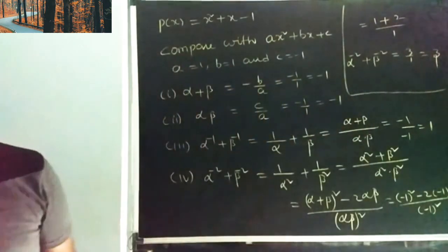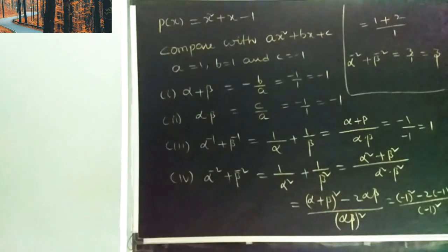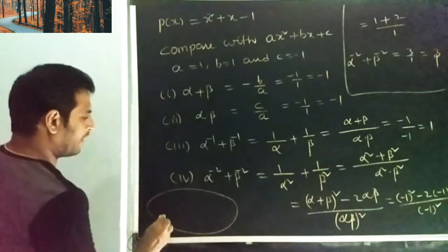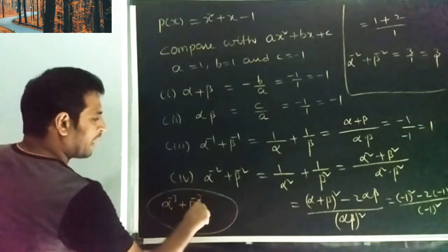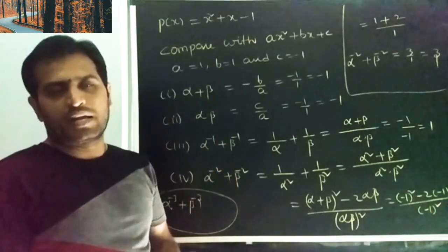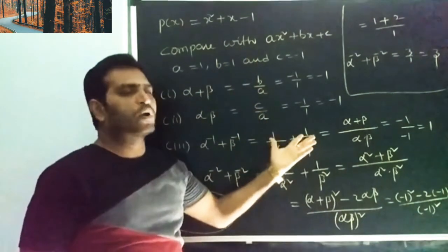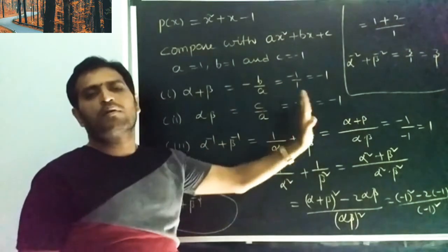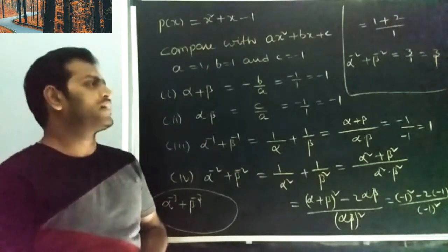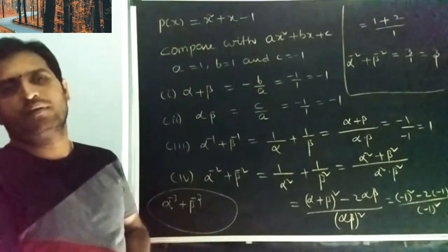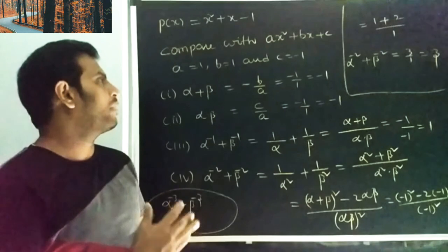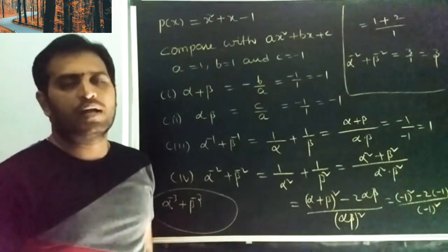Alpha power minus 2 plus beta power minus 2 is equal to 3. You can similarly find alpha power minus 3 plus beta power minus 3 using the same method. Please like and subscribe to this video. Thank you.